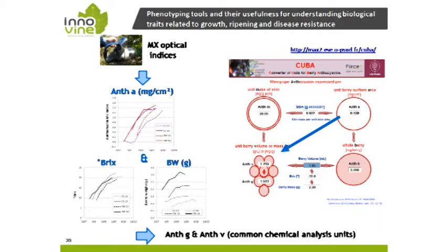There is a very good correlation between field measurements and measurements made on detached berries in the lab, with the same delay observed in 2013. The same held for Tempranillo. For chlorophyll on white varieties — Chardonnay and Riesling — again a delay in 2013 due to climatic conditions and very good correlations between field and lab measurements. Overall there was a very good correlation between field and lab measurements for anthocyanins and chlorophyll content. More recently, Force A developed a tool called CUBA — Converter of Units for Berry Anthocyanins — because the multiplex delivers results in millivolts, and it's more useful for grape growers to have anthocyanin content expressed on a berry, volume, or gram basis.